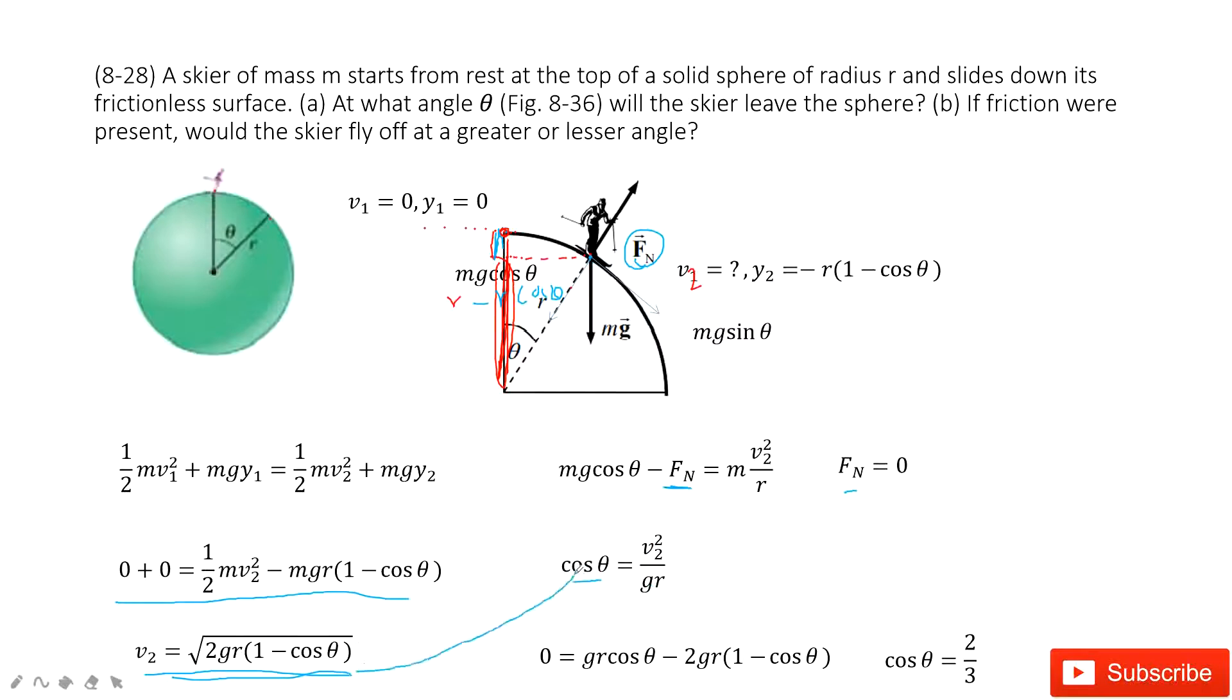And then we can find cosine theta is just v2 square divided by gr. Now you can see we have these two equations. And then can you find this angle theta? Yes, very easily.